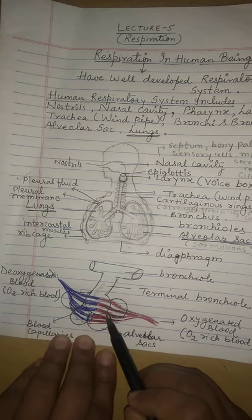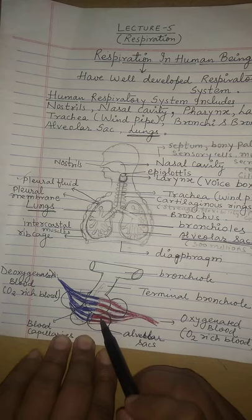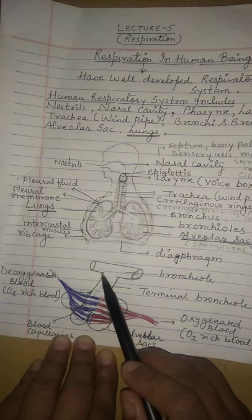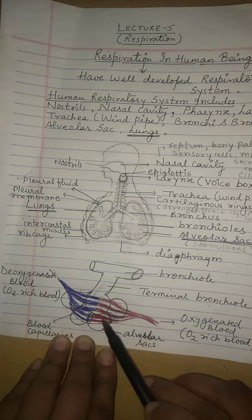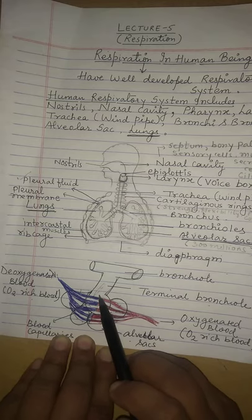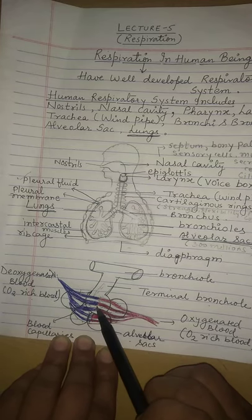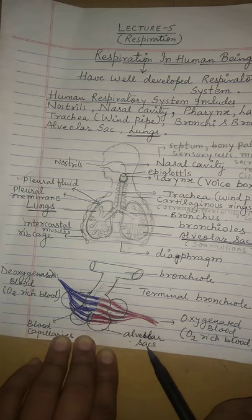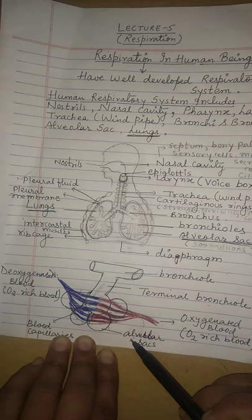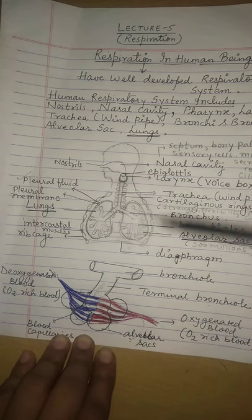The oxygenated blood is shown in red color. The terminal bronchioles — the last branches — lead to alveolar sacs, which are surrounded by a network of blood capillaries. De-oxygenated blood comes from one direction and is converted to oxygenated blood, which is then delivered to the body. This completes the overview of the human respiratory system. In the next video, the mechanism of respiration will be explained in detail.